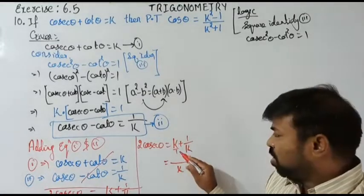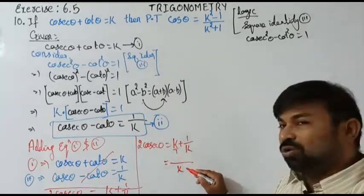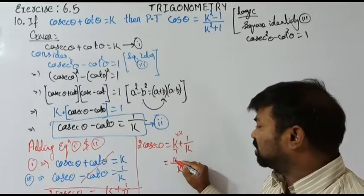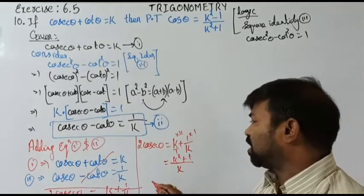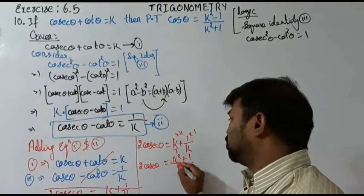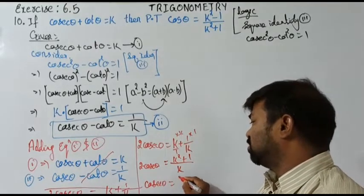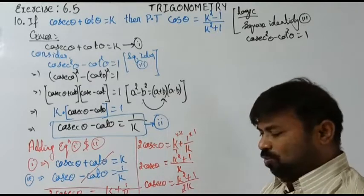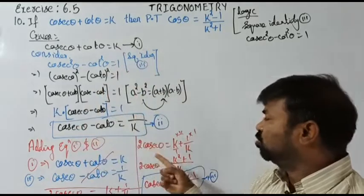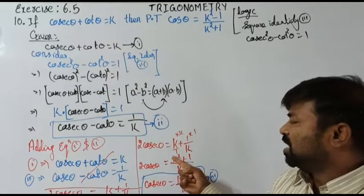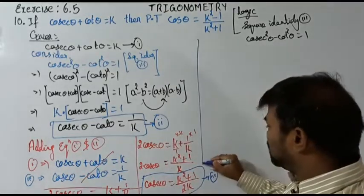Taking LCM of k plus 1/k: LCM is k, so k times k is k squared, plus 1 times 1 is 1, giving 2 cosecant theta equals (k squared plus 1)/k. Transposing 2, cosecant theta equals (k squared plus 1)/(2k). Call this equation 3.